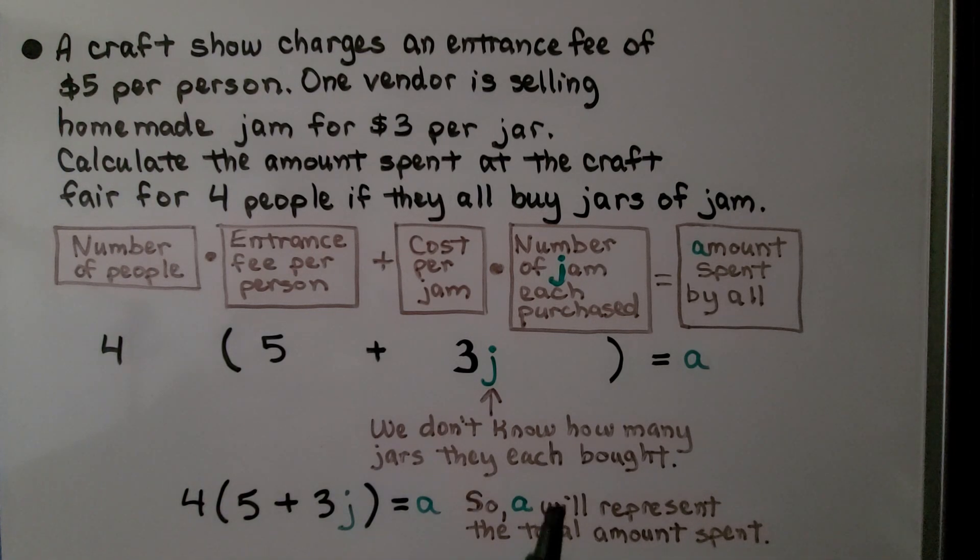Without knowing how many jars they each bought, we don't know what A is equal to. And depending on what this number is, is going to affect this number.